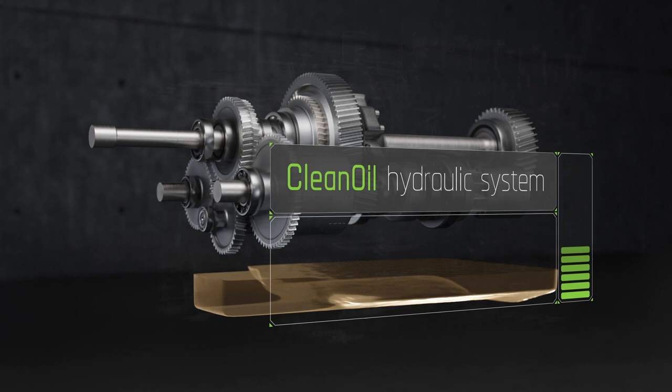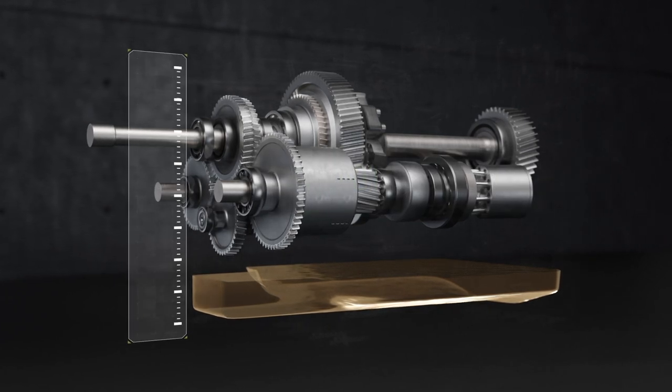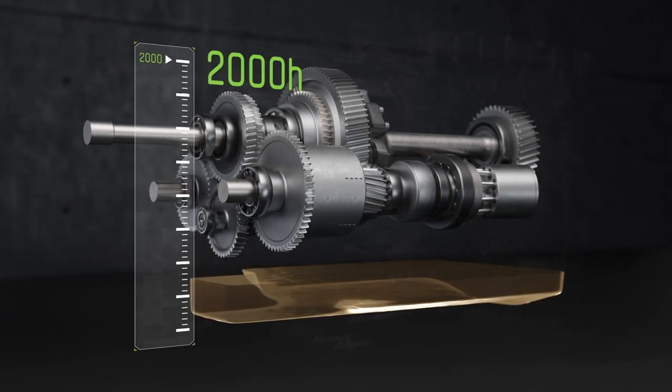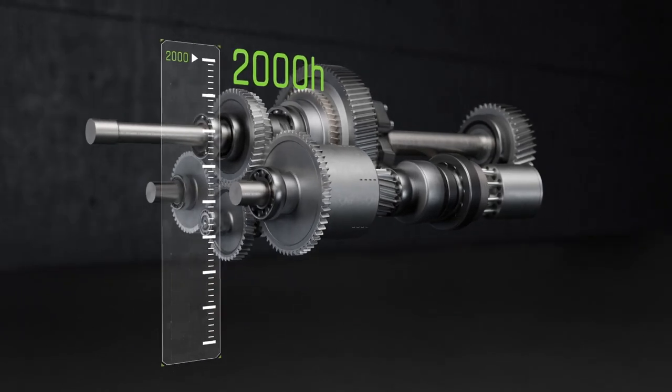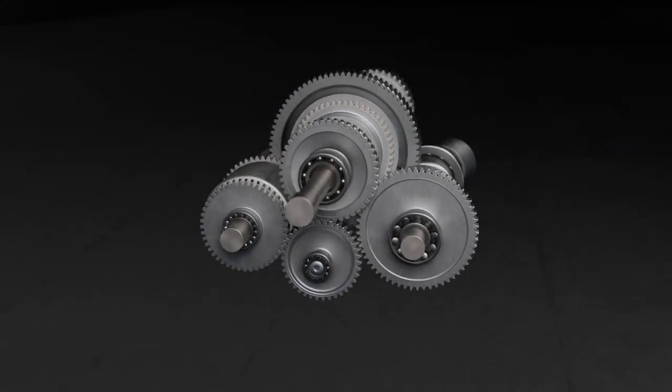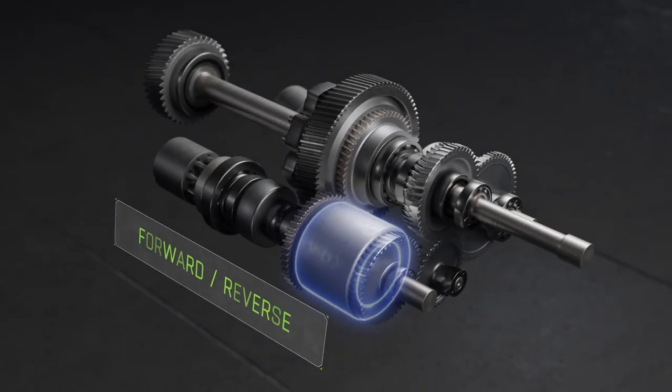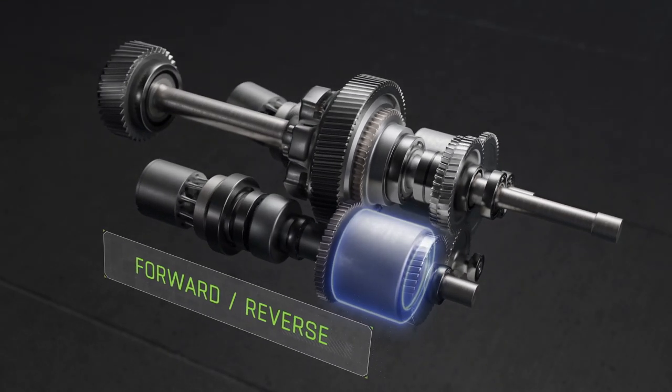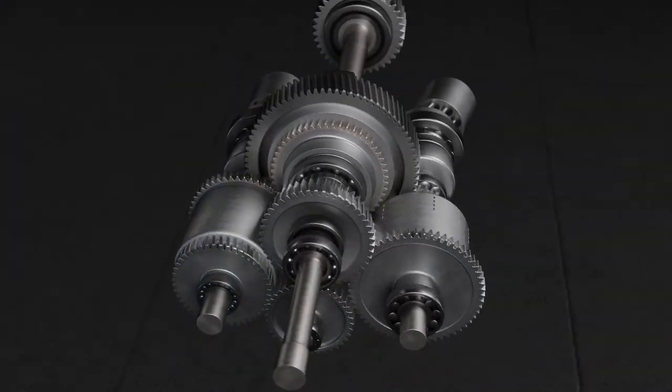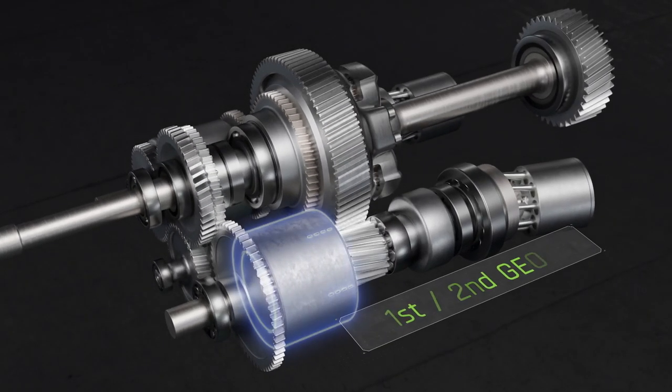In addition, the transmission oil change intervals have been extended to 2000 hours. As with all TTV transmissions, the new TTV transmission also includes a clutch for both forward and reverse travel, and two range clutches for the first and second gear.